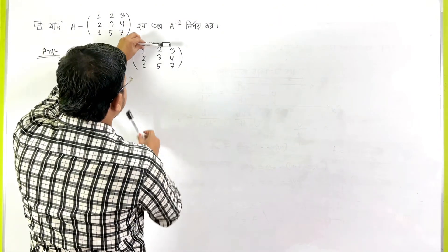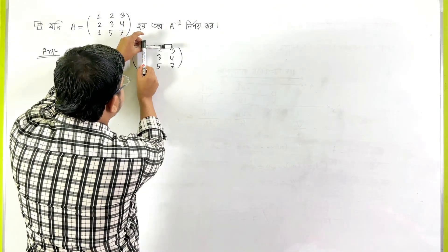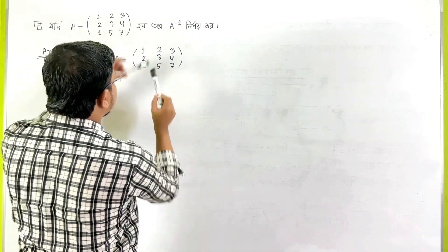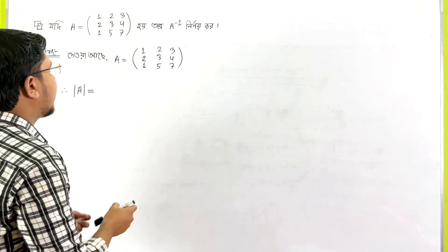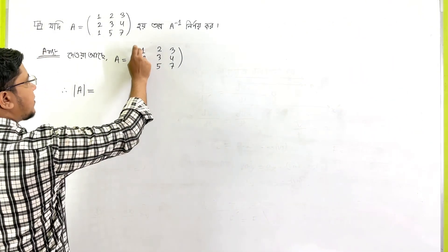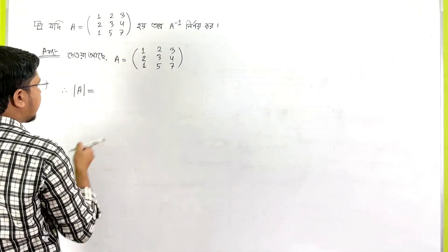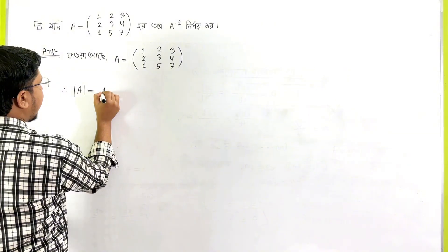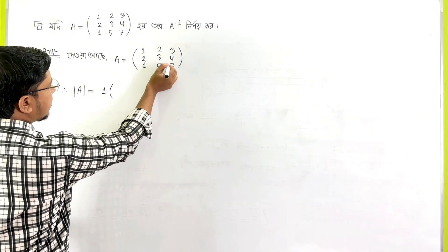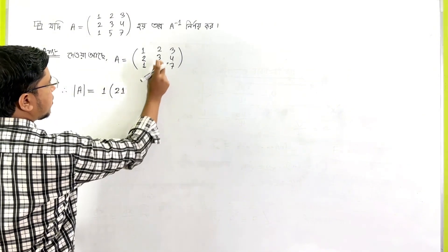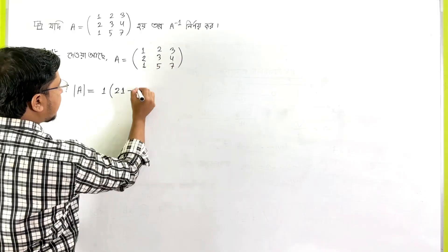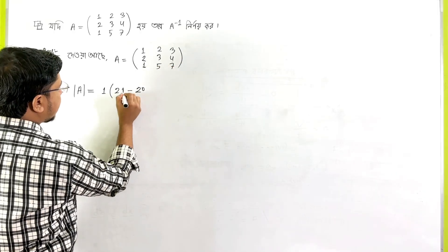The first column is the first column. So, what we have to do is 3, 4, 5, 7. So, 1 into 3, 1 minus 4, 5, 20.